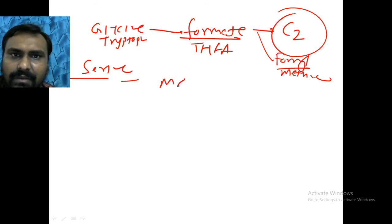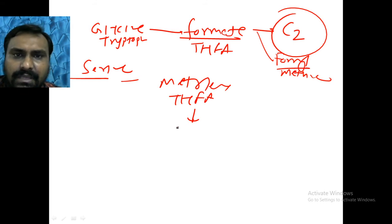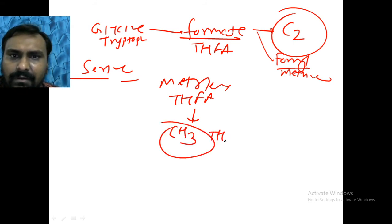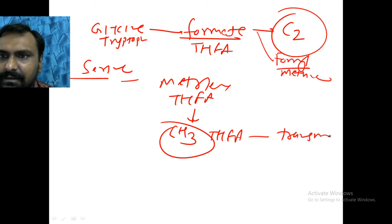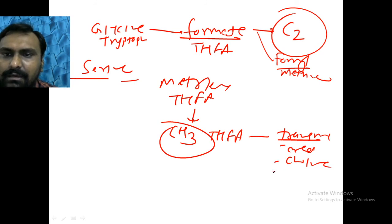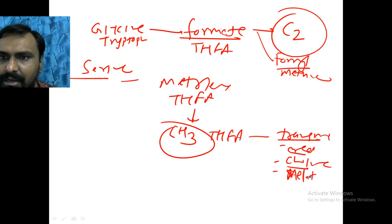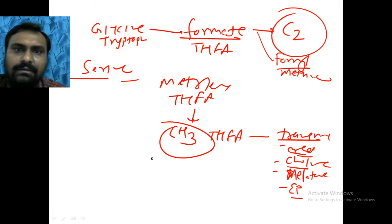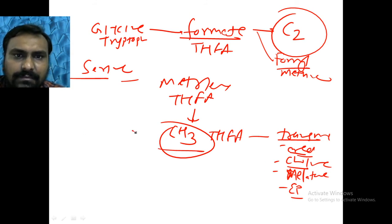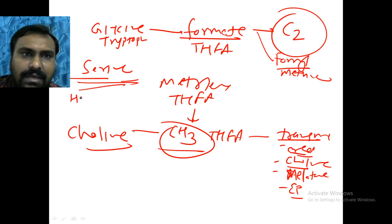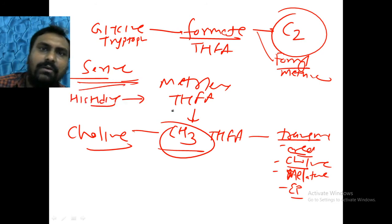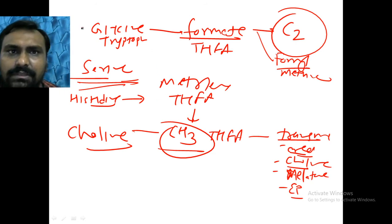Serine forms methylene-tetrahydrofolate, which can be reduced to methyl-tetrahydrofolate and is helpful in transmethylation reactions for formation of creatine, choline, melatonin, and epinephrine. The methyl group can also be donated from choline. Histidine metabolism forms formamino-tetrahydrofolate. This is the complete one-carbon metabolism.